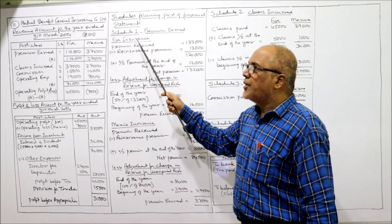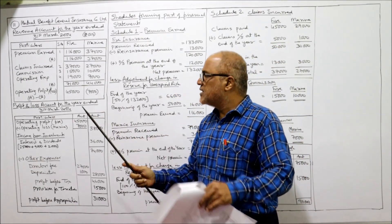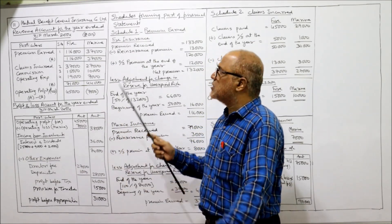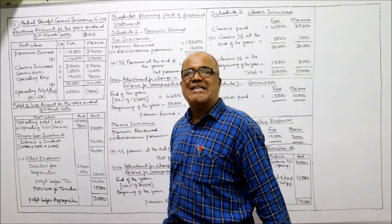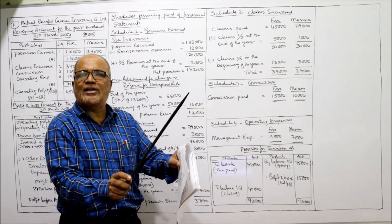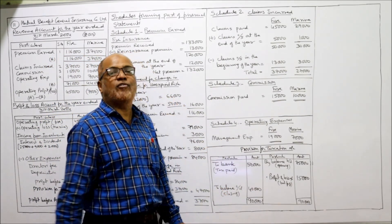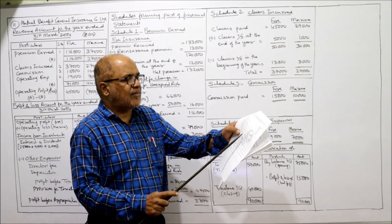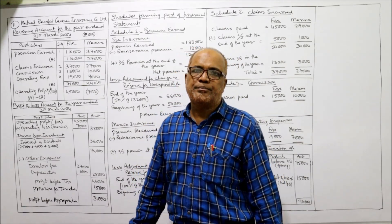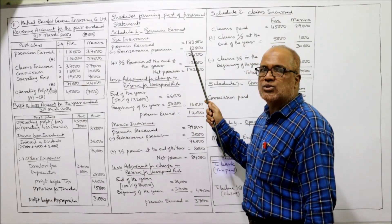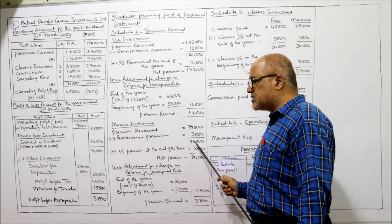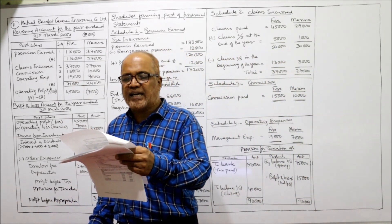Schedule 1 — Premium Earned: fire insurance premium received = 1,33,000; marine insurance premium received = 79,000. Commission to agents (Schedule 3): fire = 15,000, marine = 10,000 — taken directly with no adjustment. Expenses of management (Schedule 4): operating expenses fire = 19,000, marine = 7,000. Reinsurance premium is deducted from premium: fire reinsurance = 13,000, marine reinsurance = 3,000. So net premium: fire = 1,33,000 − 13,000 = 1,20,000; marine = 79,000 − 3,000 = 76,000.